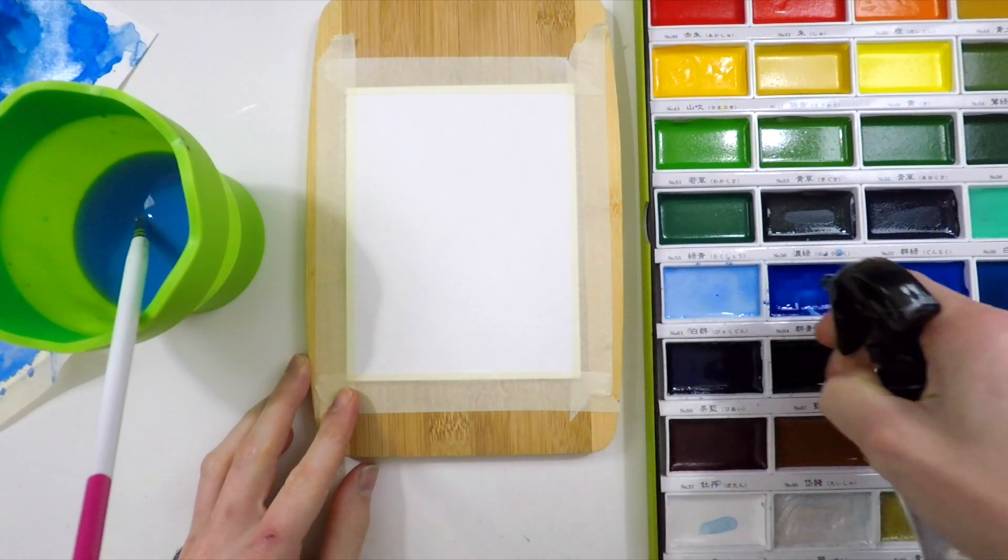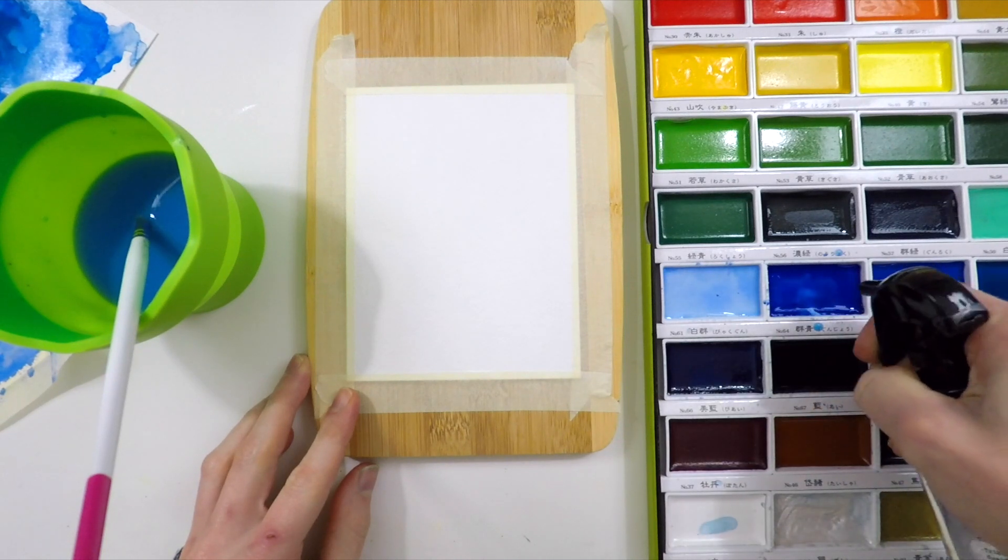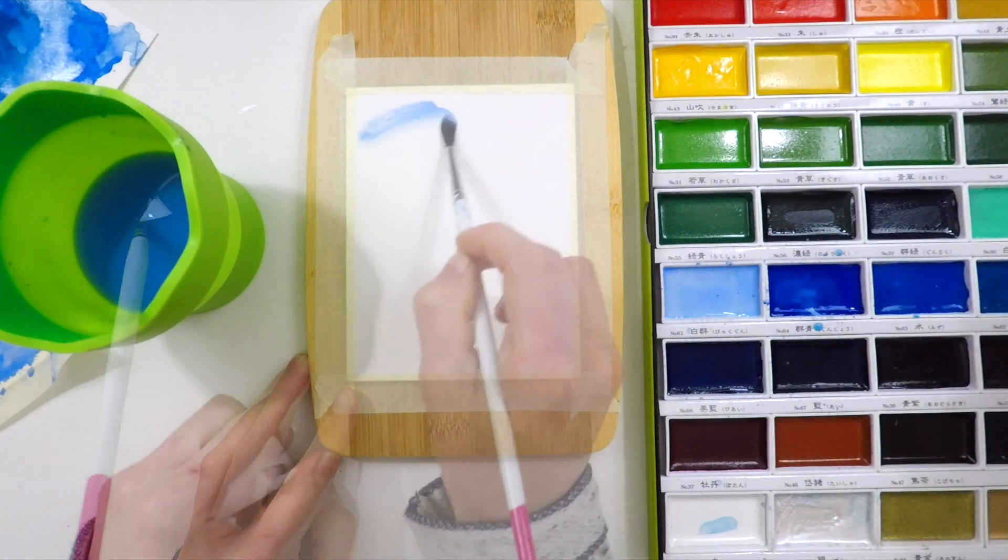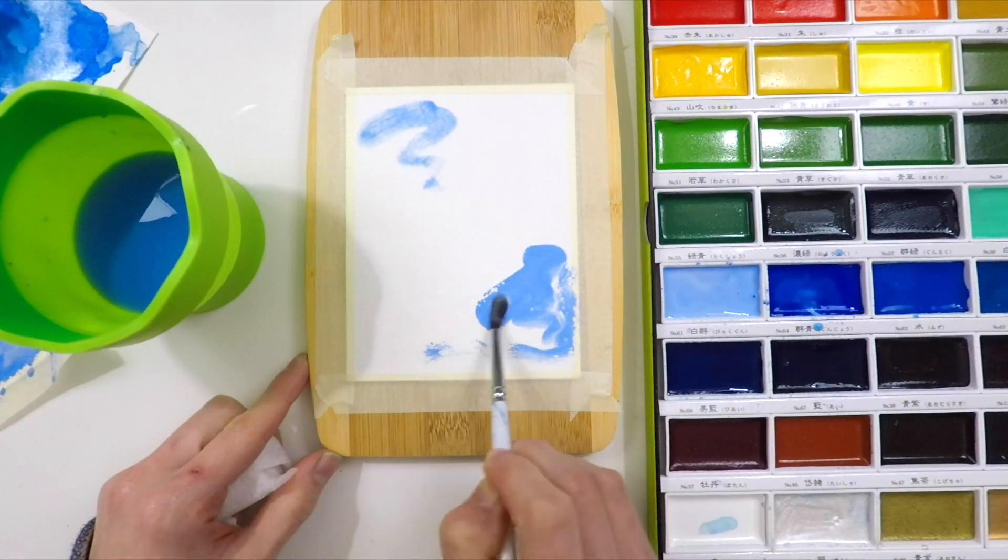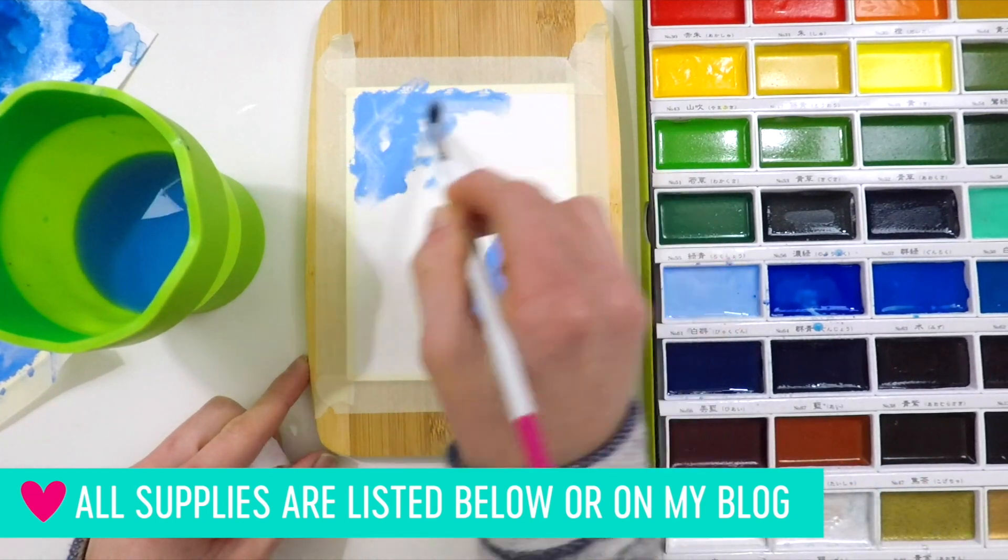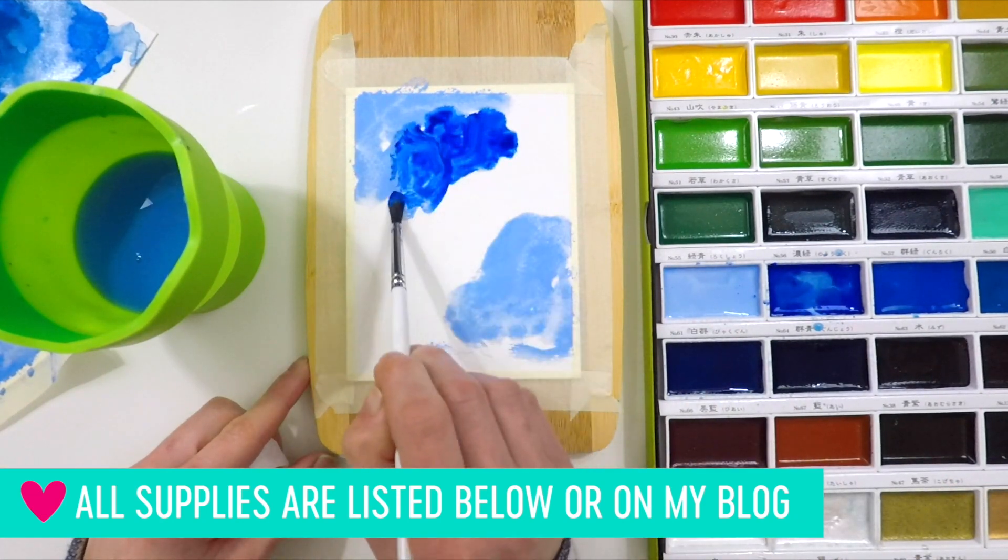I'm getting started by applying water into my palettes, making sure my wells have a good amount of water in them. The Gansai Tambis are newer paints for me, so I'm getting used to using them. I find that adding a lot of water into the wells before I start painting is very helpful.